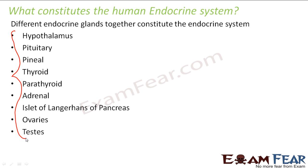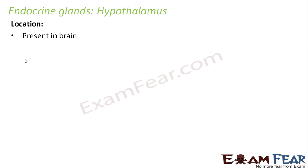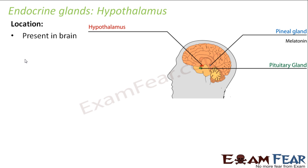We will start with the first endocrine gland, the hypothalamus. For each endocrine gland we will discuss three things: where it is located in our body, which hormone it secretes, and what function that hormone performs. The hypothalamus is located in the brain, as shown in the picture — the red structure you see here is the hypothalamus.